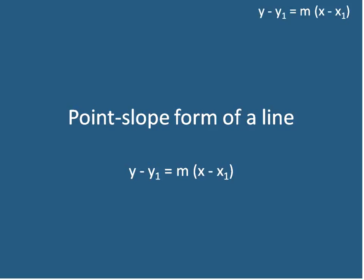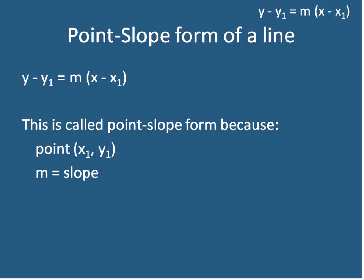Hello, this is Mr. Buffington, and our lesson is about the point-slope form of a line. The point-slope form basically gives us an equation that shows us a point, x1, y1, and the slope, m. So x1 and y1 is a point that lies on that line, and m is the slope of that line.